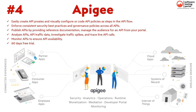Apigee is our fourth API testing tool. Features include: easily create API proxies and visually configure or code API policies as steps in the API flow, enforce consistent security best practices and governance policies across all APIs, publish APIs by providing reference documentation, analyze API traffic data, investigate traffic spikes, and trace live API calls, monitor APIs to ensure availability, publish APIs to a customizable portal, and a 60-day free trial.